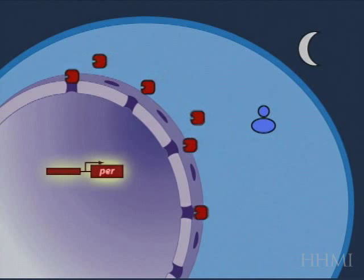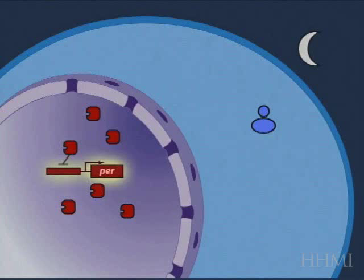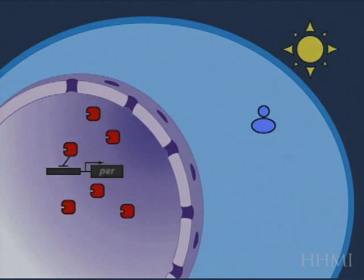And at some point in the middle of the night, there's enough protein which has been produced, and that protein migrates into the nucleus, and the protein then acts as a repressor to turn off its own gene expression.